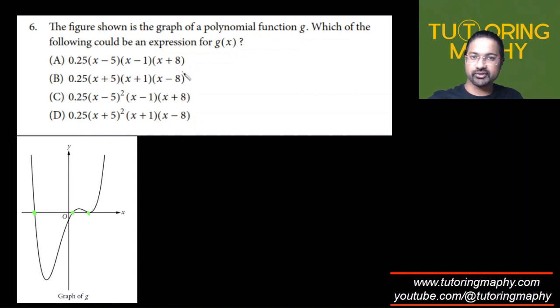This expression equal to zero would mean that negative 5 and negative 1 are the two roots, which is just not possible because these two are negative but there are no two negative roots. There is only one, so B is not possible. Likewise, D is also not possible because there are two negative roots over here.